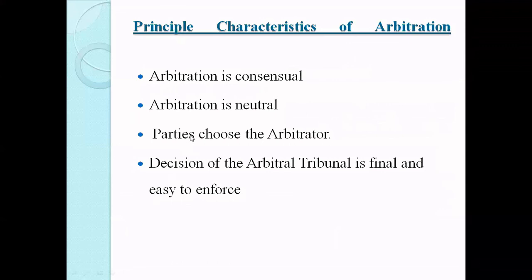What are the principal characteristics of arbitration? First, arbitration is consensual in nature, meaning both parties must together consent to arbitration; it does not happen on the consent of one party alone. Second, arbitration is neutral because the arbitrator resolving the dispute is neutral — not having an interest in or trying to favour any of the parties. Third, parties choose the arbitrator. When parties form a contract, they put a clause stating that when there is a dispute, it will be resolved through arbitration, and both parties mutually decide on the arbitrator.